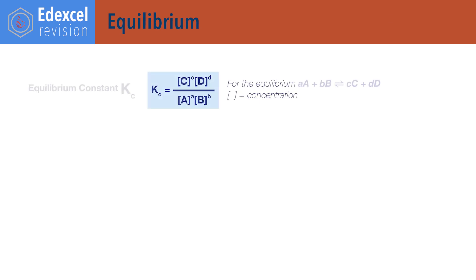For equilibrium. Kc equals concentration of products times each other divided by concentration of reactants times each other, each raised to the power of their molar ratio in the balanced reaction equation. Kc is the equilibrium constant based on concentration; concentrations should be in moles per decimetre cubed, and the units of Kc can be different depending on the reaction.